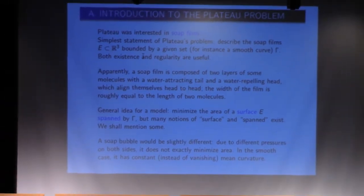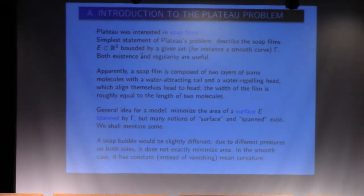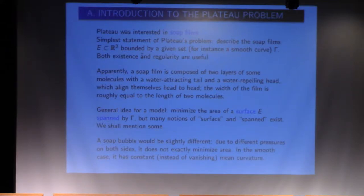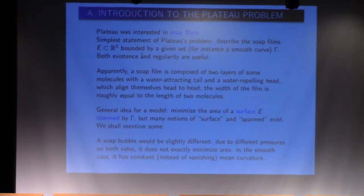So the Plateau problem is the following. In general terms, you give yourself some boundary set — I will try to call it gamma. You're looking for a set E which is spanned by gamma, or attached to gamma in a way we'll have to make precise. You try to make the surface measure of the set E as small as possible, given the fact that it's attached to gamma. That's the general Plateau problem. I will say soap films for this problem.